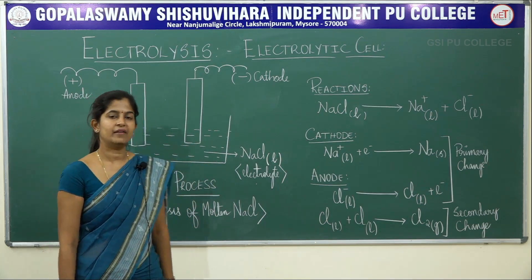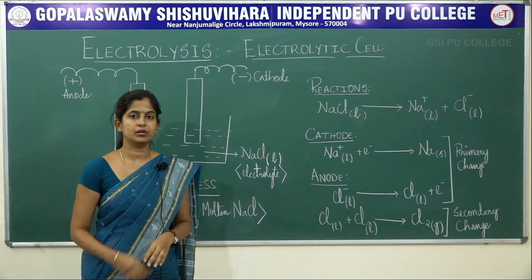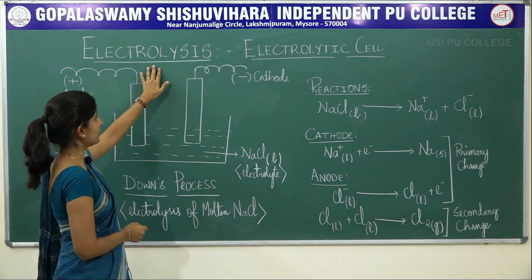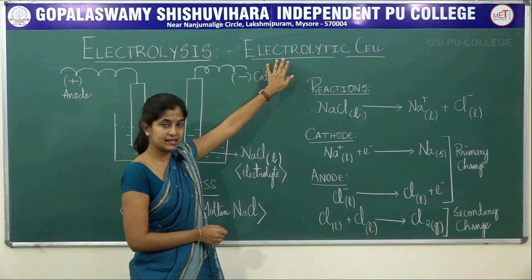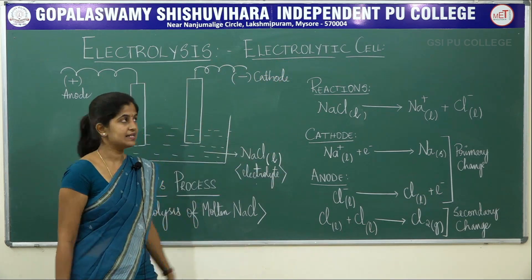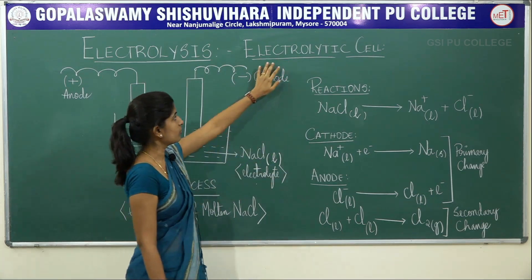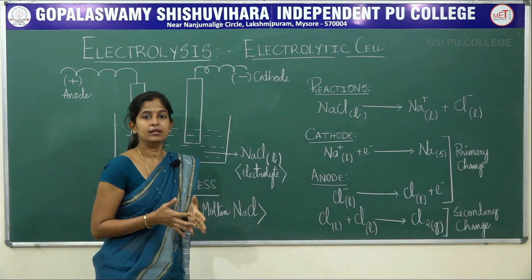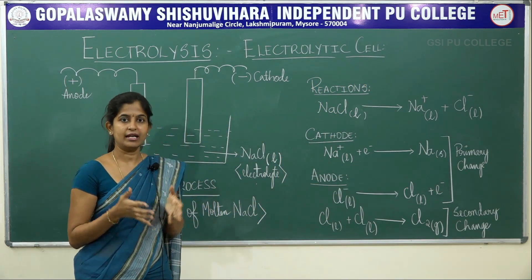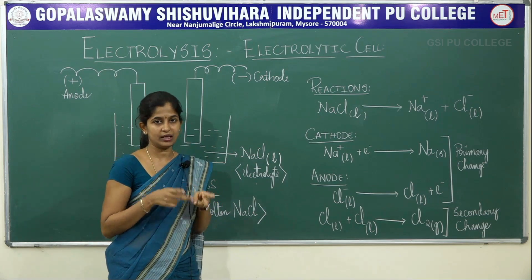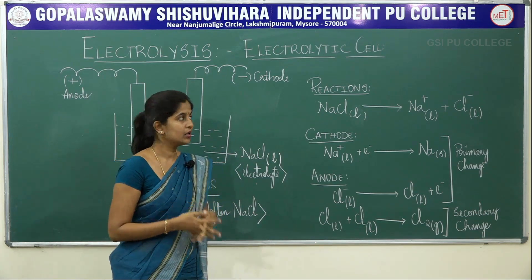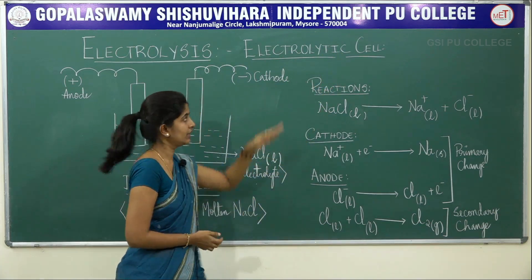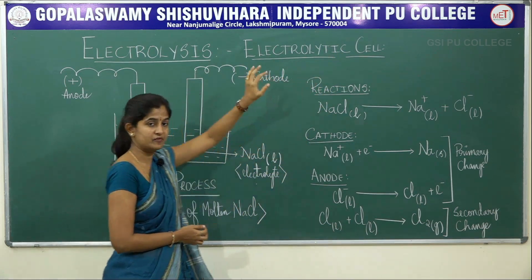Good morning students. Today we'll be having the continued part of electrochemistry — we are going to discuss about electrolysis, that is nothing but the electrolytic cell. As discussed in the previous class, an electrolytic cell is a setup of an anode and a cathode and an electrolyte, that is two electrodes and an electrolyte.